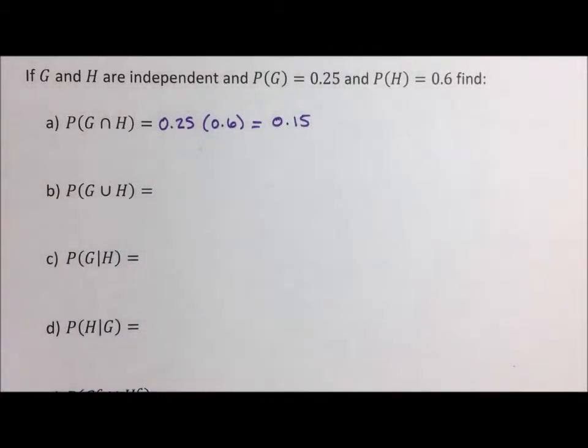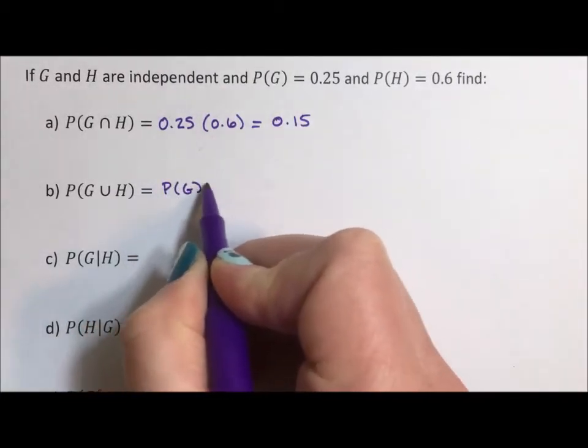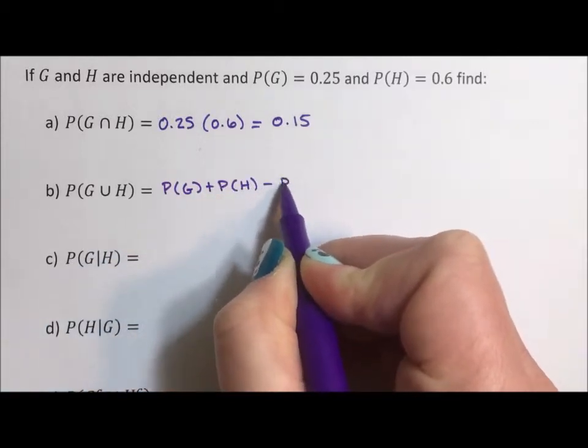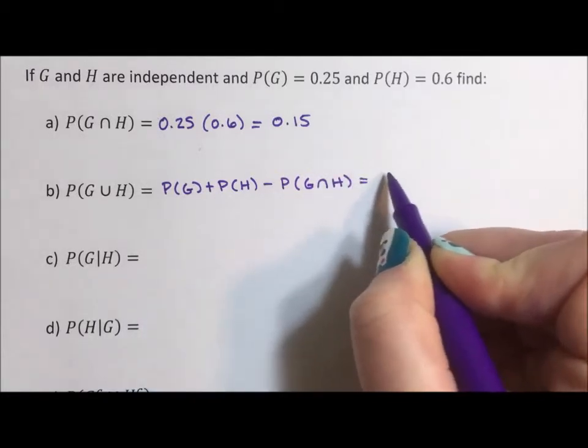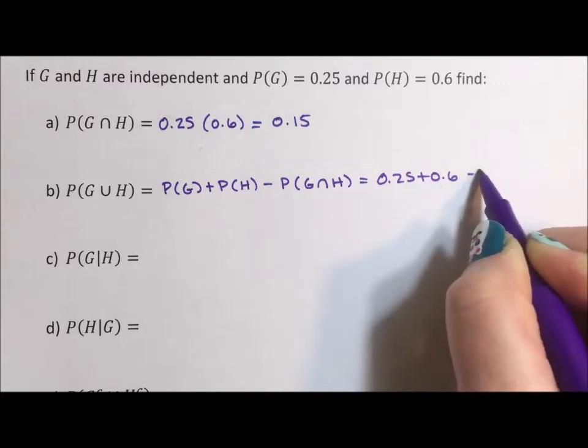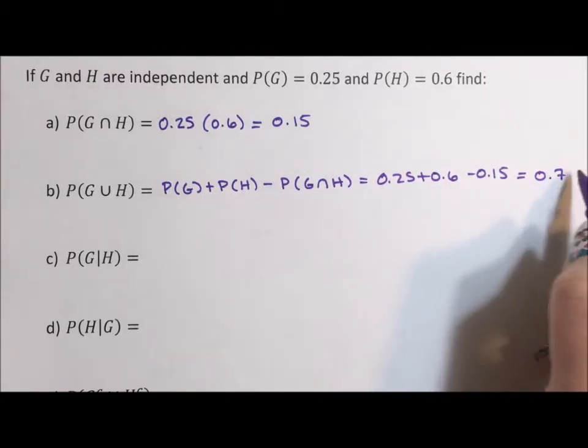The probability of the union, now there's a couple of ways of doing this. The formula says it's the probability of G plus the probability of H minus the probability of G intersection H. So this is going to be 0.25 plus 0.6 minus 0.15, which is going to give us 0.7.